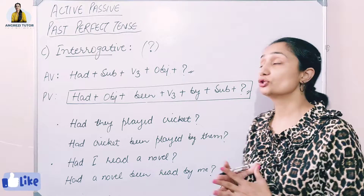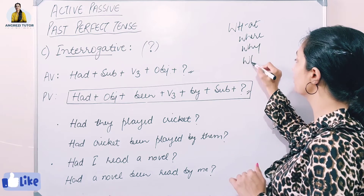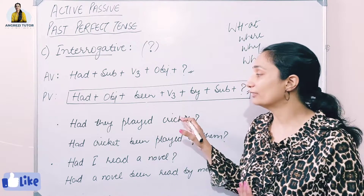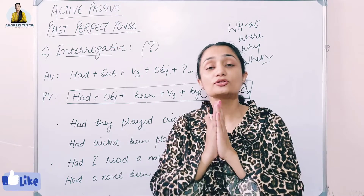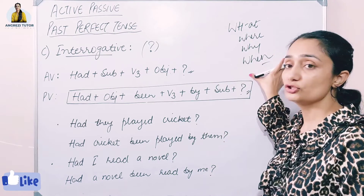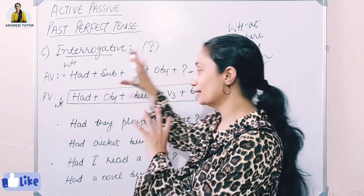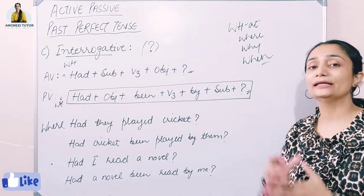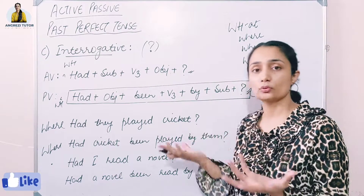For WH-family questions — what, where, why, when — the sentence structure remains the same but the WH word comes first. For example: 'Where had they played cricket?' becomes in passive: 'Where had cricket been played by them?' The WH word stays at the beginning.